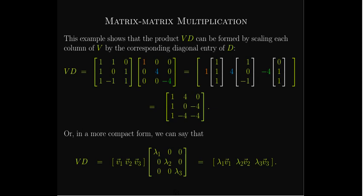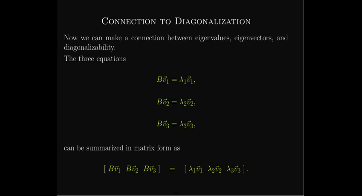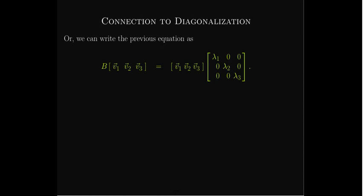Let's put these ideas together and see the connection to diagonalizability. We start with our three eigenvalue-eigenvector equations for matrix B. We can condense this into matrix form, having one column per equation: B times V₁ equals λ₁V₁, B times V₂ equals λ₂V₂, B times V₃ equals λ₃V₃. On the left-hand side, I can factor out B. The right-hand side is just the matrix V times the diagonal matrix D with diagonal entries λ₁, λ₂, and λ₃. So this simply says: B times V equals V times D.